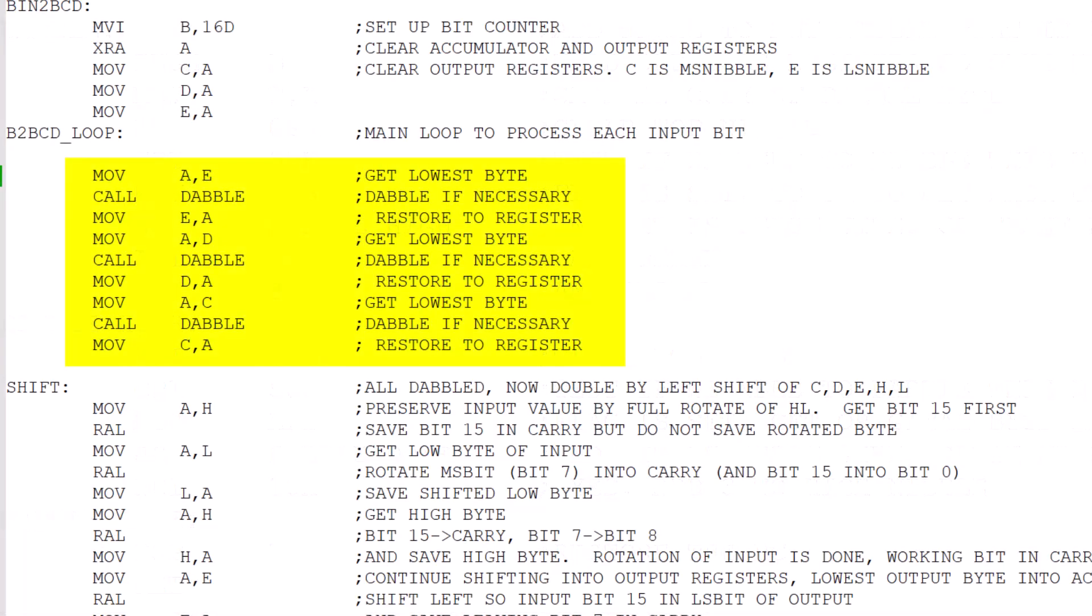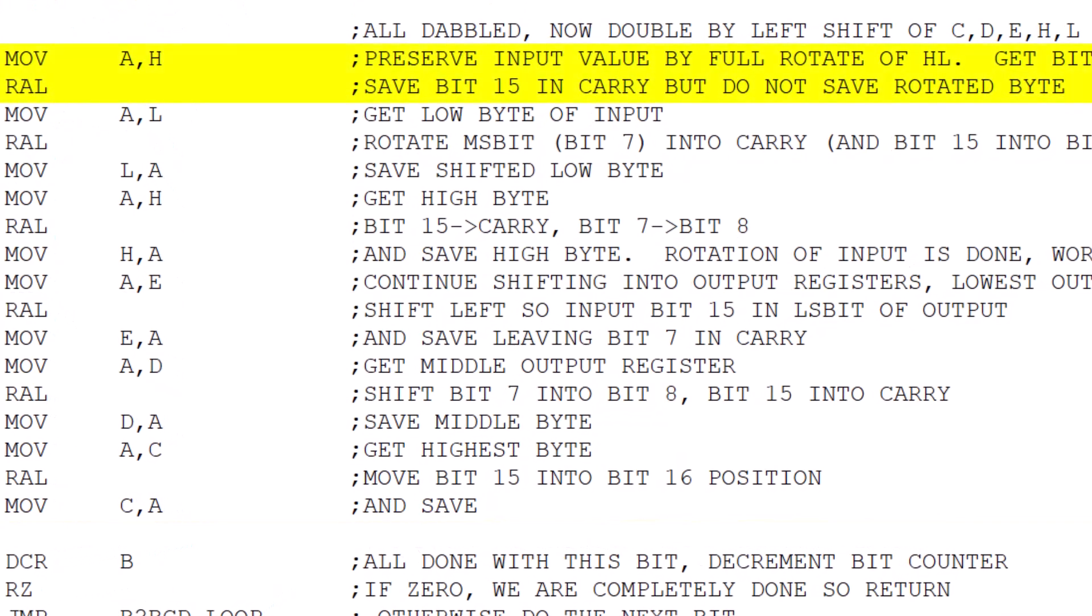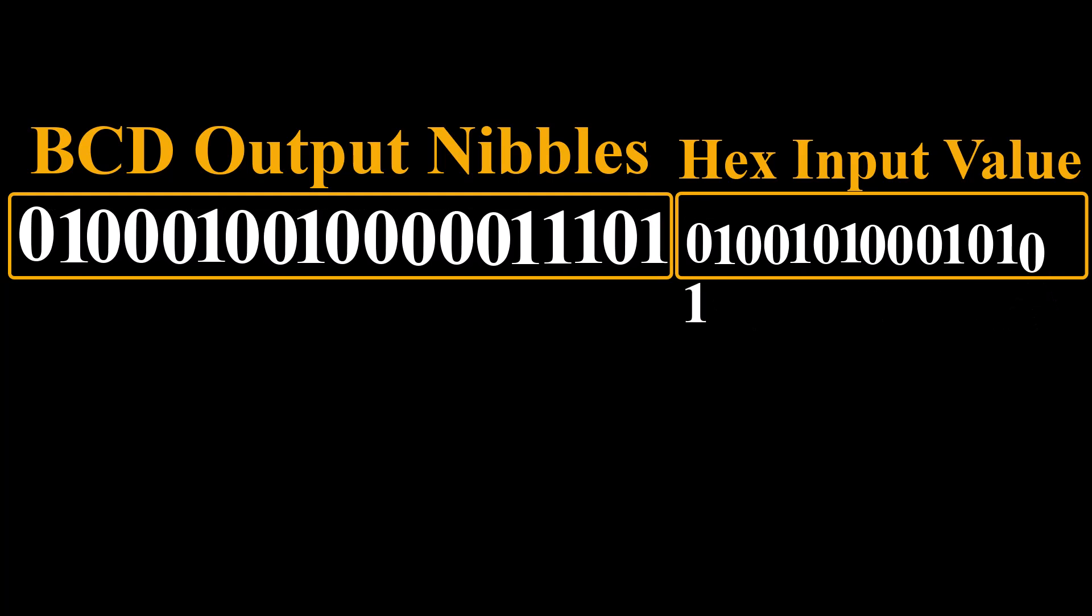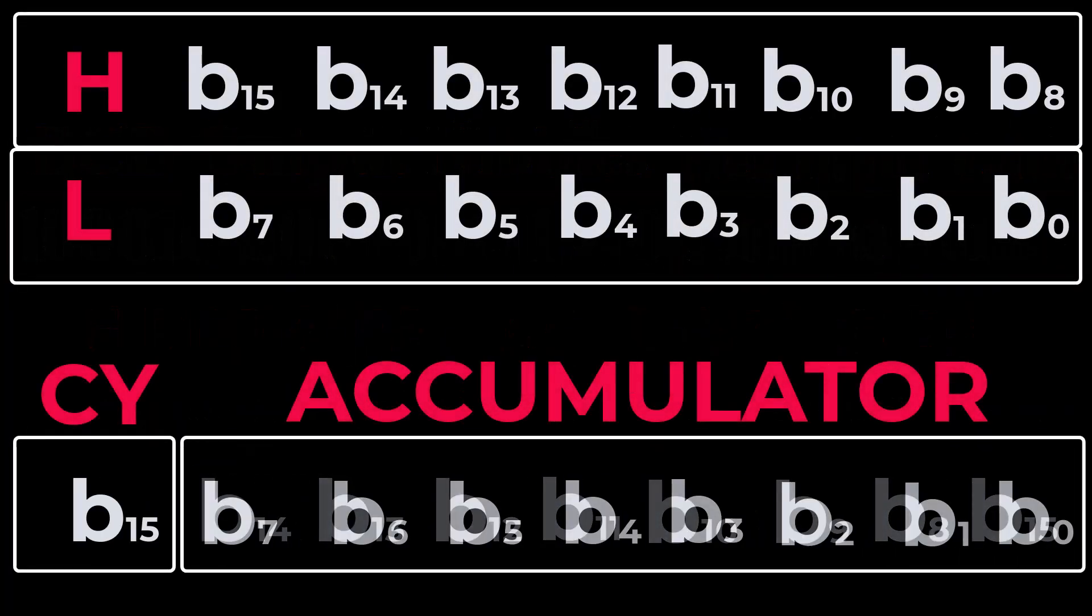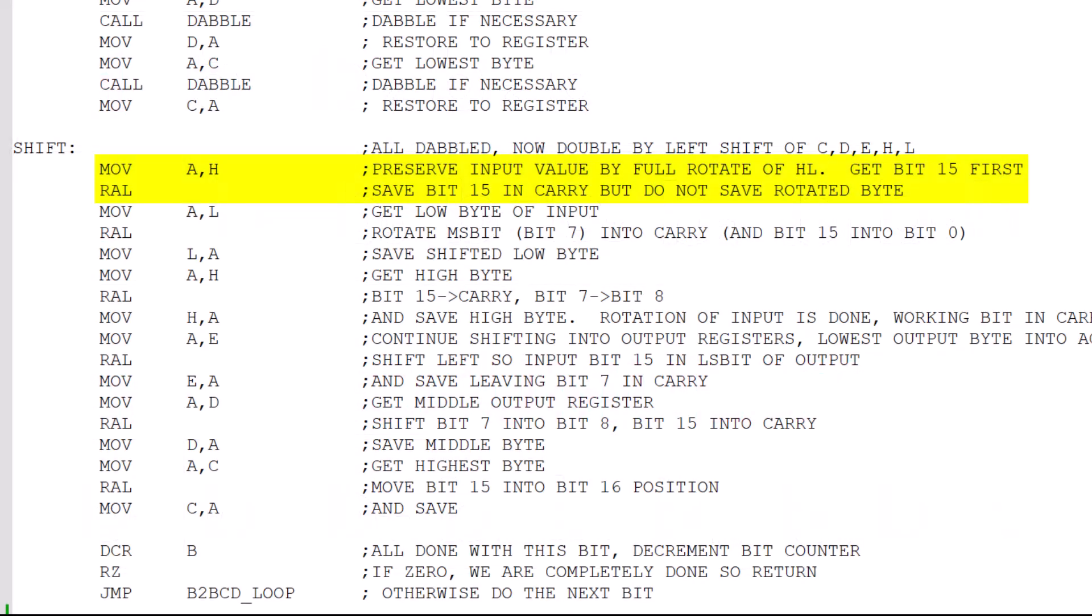So all the dabbling is done now for the double. The shift is going to be across all 40 bits. But while all 40 bits are shifted, the program does a rotate of the HL pair to keep the original input value intact when the conversion is complete. And that's really just kind of a diagnostic thing so that the HL is the same after everything is done. And the shift is pretty much the same as it was in the double and add program from a couple of videos ago where the carry is used to make the registers contiguous. First bit 15 is retrieved so that HL can be a rotate rather than a shift. And then one by one, starting at the lowest register L, the registers are moved into the accumulator and rotated left through the carry then put back into its register. This is repeated for registers H, E, D, and C, and C is the highest nibble of the output. After the double, the bit counter is decremented and if all 16 bits have been processed, the utility returns.